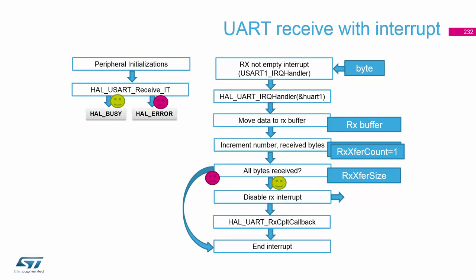Sending and receiving are very similar. First, we initialize the peripheral and set the state to busy or error if we detect an error. When we receive a byte, we go into the interrupt handler — we check which handle belongs to our interrupt, move data into the receive buffer, and increment the number of received bytes. We check if we have received all the bytes. If not, we stay in the interrupt. If yes, we disable the Rx interrupt, go into the reception callback, and set the HAL status to OK so that someone else can use the UART reception.